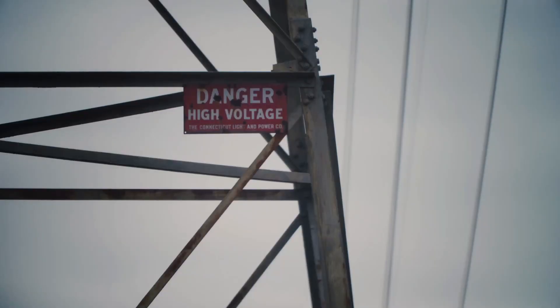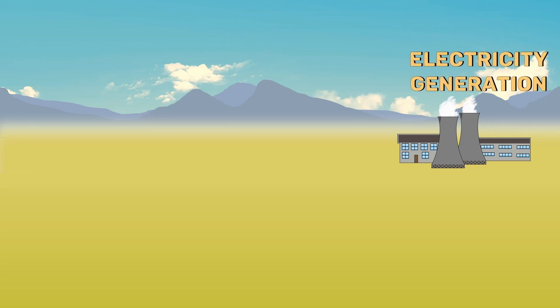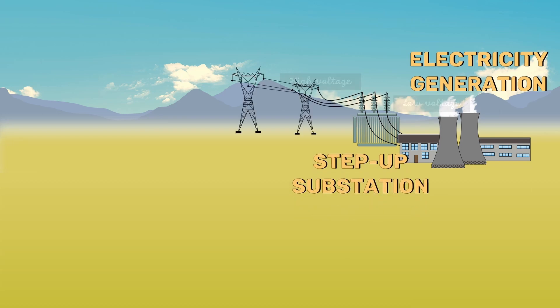To reduce the losses, the electricity is transmitted at very high voltages. The electricity generated from the power plants is first delivered to the step-up substation, where the step-up transformer raises the voltage.